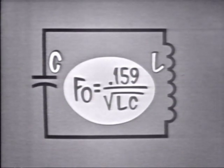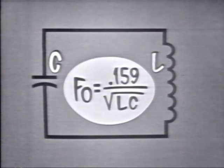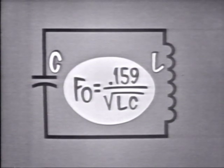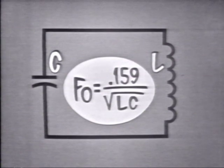In the LC circuit, L and C compare to the rubber bands and the weight as the frequency determining device. The resonant frequency of the tank can be determined by the formula F sub O equals 0.159 over the square root of LC. Very simply, the frequency is determined by the size of L and C.